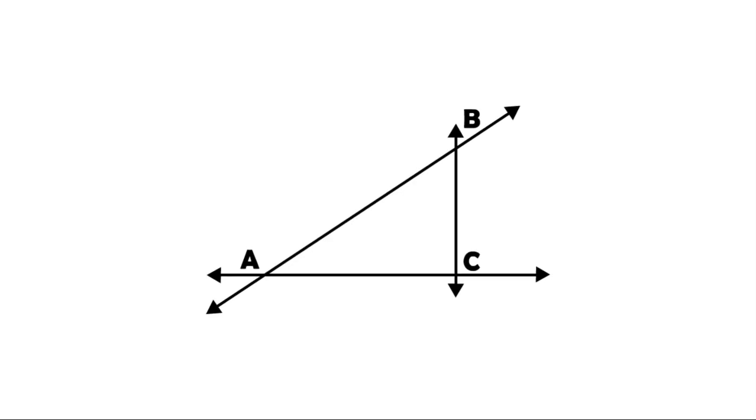Now, let's take a look at this figure. Here, we have line AB that intersects with line BC. There is also line AC that intersects with line AB. Finally, we have line BC that is perpendicular to line AC.